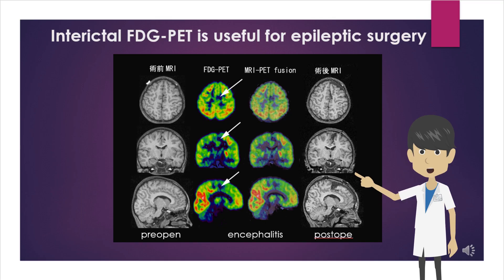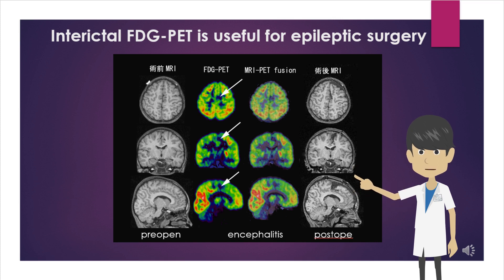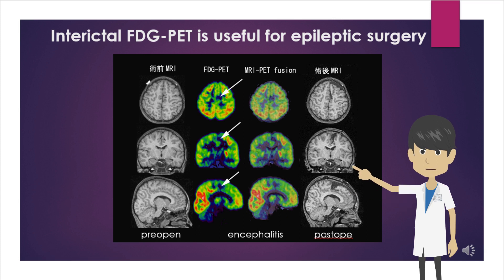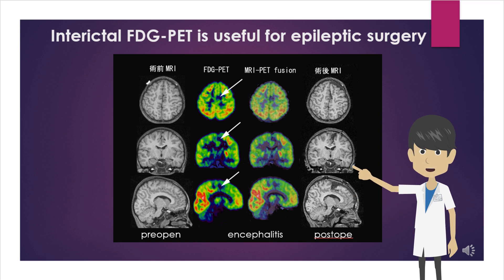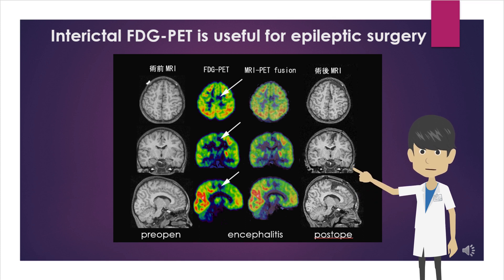PET of glucose metabolism in the interictal phase can provide useful information for epileptic focus resection. In this case, MRI shows a small cystic lesion in the left supplementary motor area, and glucose metabolism PET shows hypometabolism around the lesion, which is more evident on fused MRI and PET images. Epileptic seizures resolved after resection including the lesion. Post-operative pathology showed evidence of encephalitis.